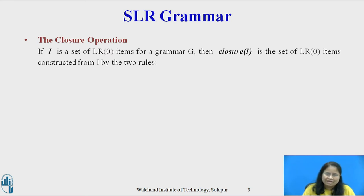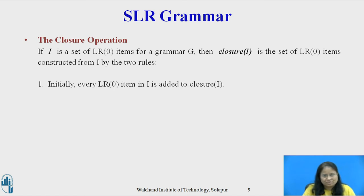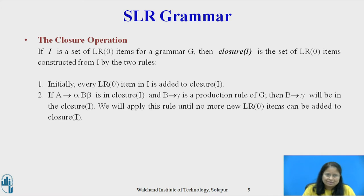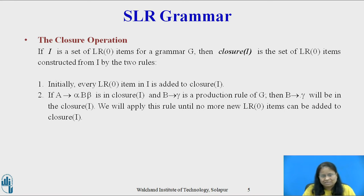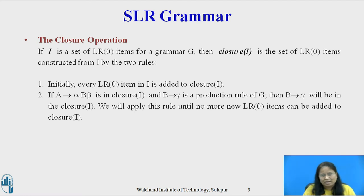The Closure Operation. If I is a set of LR0 items for grammar G, then closure(I) is a set of LR0 items constructed from I by two rules. First, every LR0 item in I is added to closure(I). Second, if A derives alpha dot B beta is in closure(I), and B derives gamma is a production, then we include B derives dot gamma in closure(I). We apply this rule until no more new LR0 items can be added.